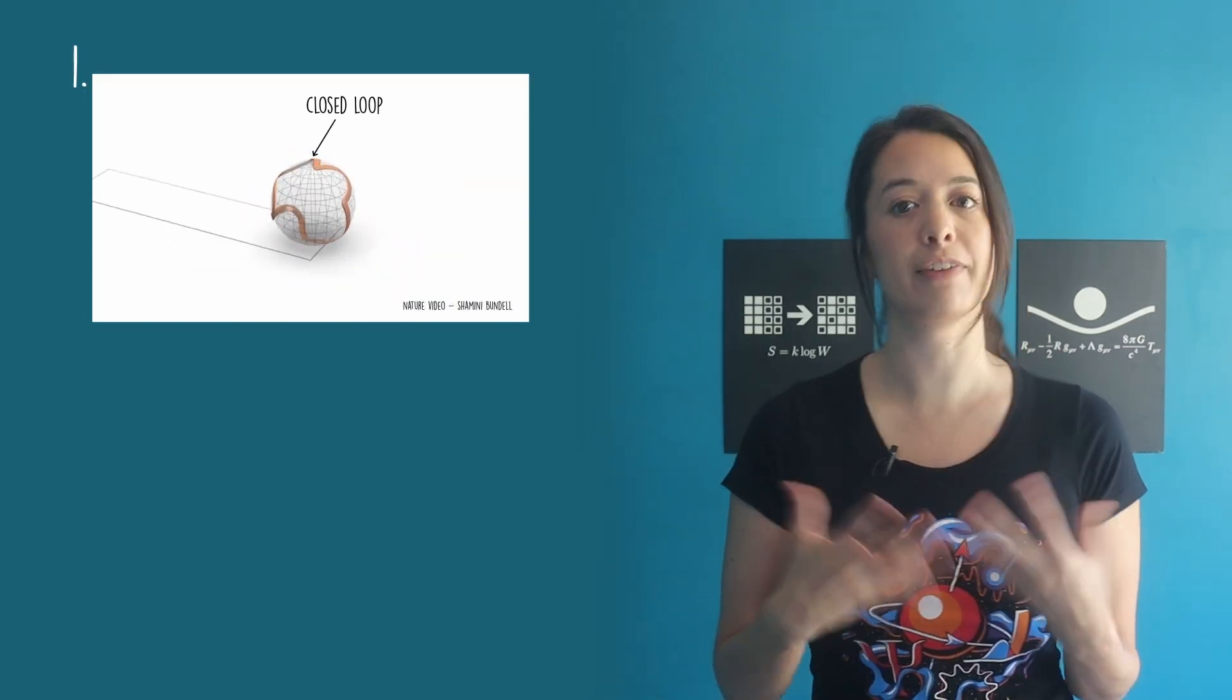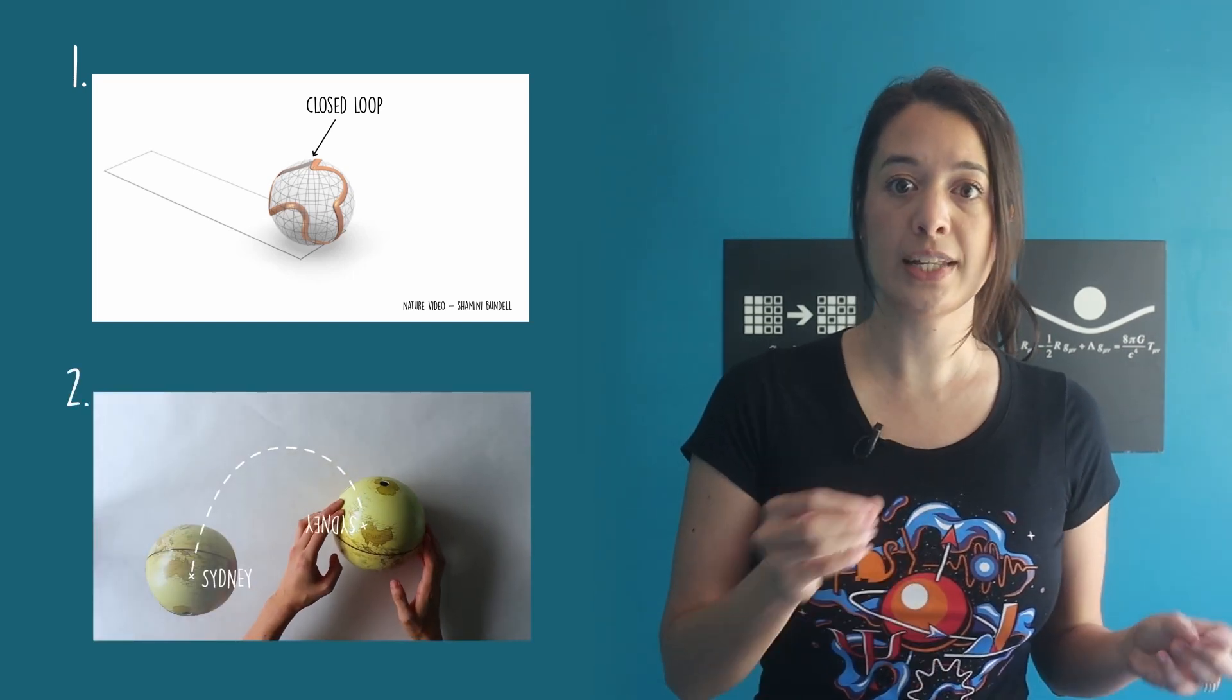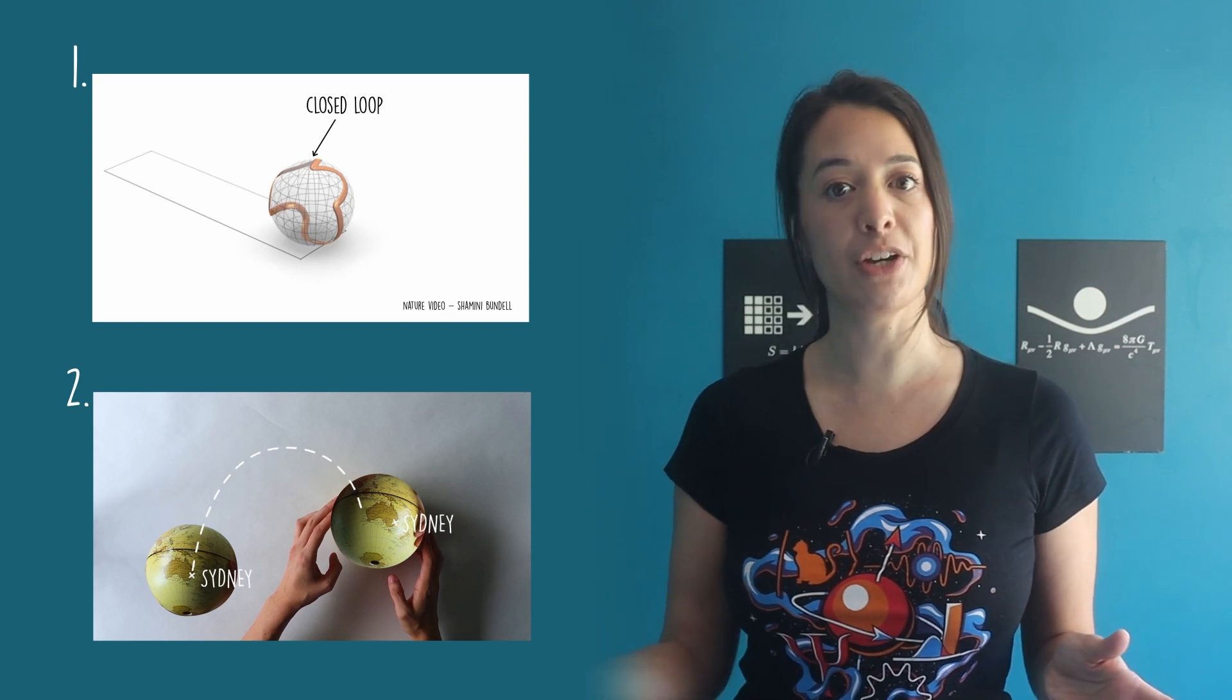Let's recap. Our first condition is that our path needs to form a closed loop on the inner sphere of our trajectoid. And our second condition is that the trajectoid needs to end up in the same orientation as when it started by the end of each period.